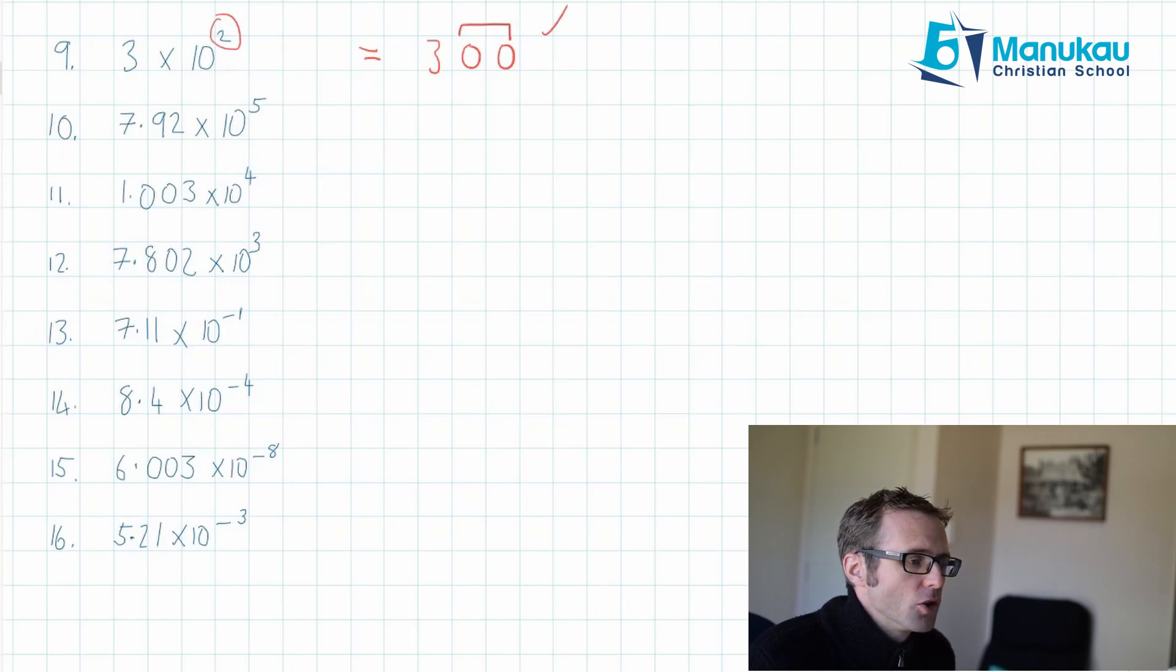Let's move on to the next one. 7.92 times 10 to the power of 5. I write 7, 9, 2, 0, 0, 0, 0. I check. Do I have 5 here? 1, 2, 3, 4, 5. Yes, and I do here. So that's correct. 10 to the 5 is 100,000, and 7 times 100,000 is 700,000. So 7.92 times 100,000 is 792,000.